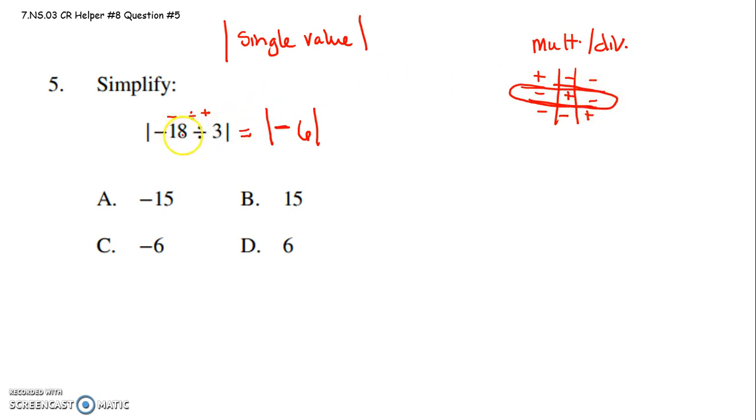So inside the absolute value, it's negative 18 divided by 3. That gets us to a negative 6. But now we have to take the absolute value of that negative 6.